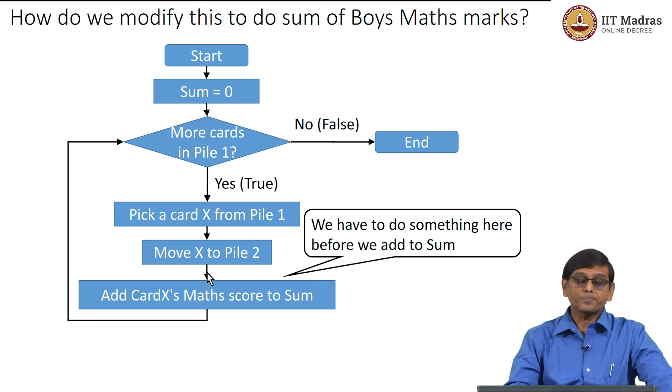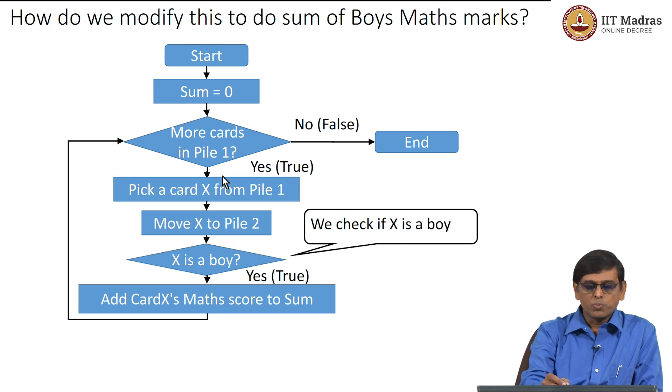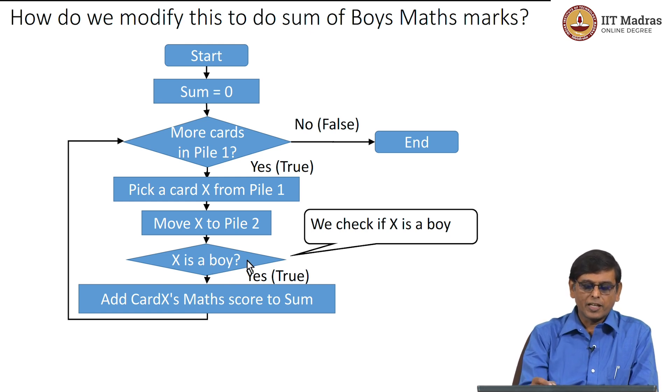And how do we do that? We have seen earlier that the way to do a check and then proceed in the flowchart is by using a condition box, and the condition box is denoted by diamond. So we have to insert inside this a diamond box. And what are we checking inside the diamond box? We are checking whether the card X has boy written on it, which is M. In our case the card will have M, the gender M written on it. So we are checking whether X is a boy or not.